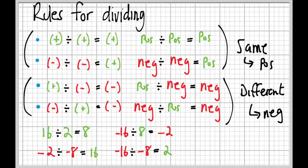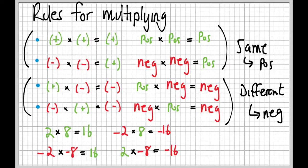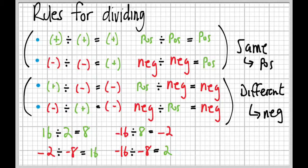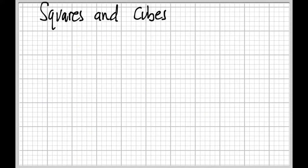The rules for dividing are exactly the same as for multiplication: positive divided by positive is positive, negative divided by negative is positive, and if the signs are different the answer is negative. The examples work out the same too — before it was two times eight equals sixteen, now we have sixteen divided by two equals eight — but you can check those yourself.